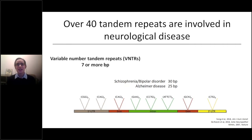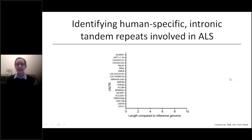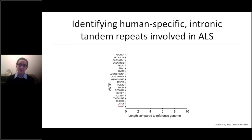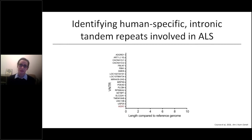We wanted to take a top-down approach to identify other candidates to study. We identified certain characteristics of other tandem repeats involved in neurological disease — for example, they were human-specific intronic non-mobile element insertions — and we developed a list of 20 VNTRs as candidates. In this particular project we were interested in amyotrophic lateral sclerosis, or ALS, which is a rapidly progressive and uniformly fatal motor neuron disease.